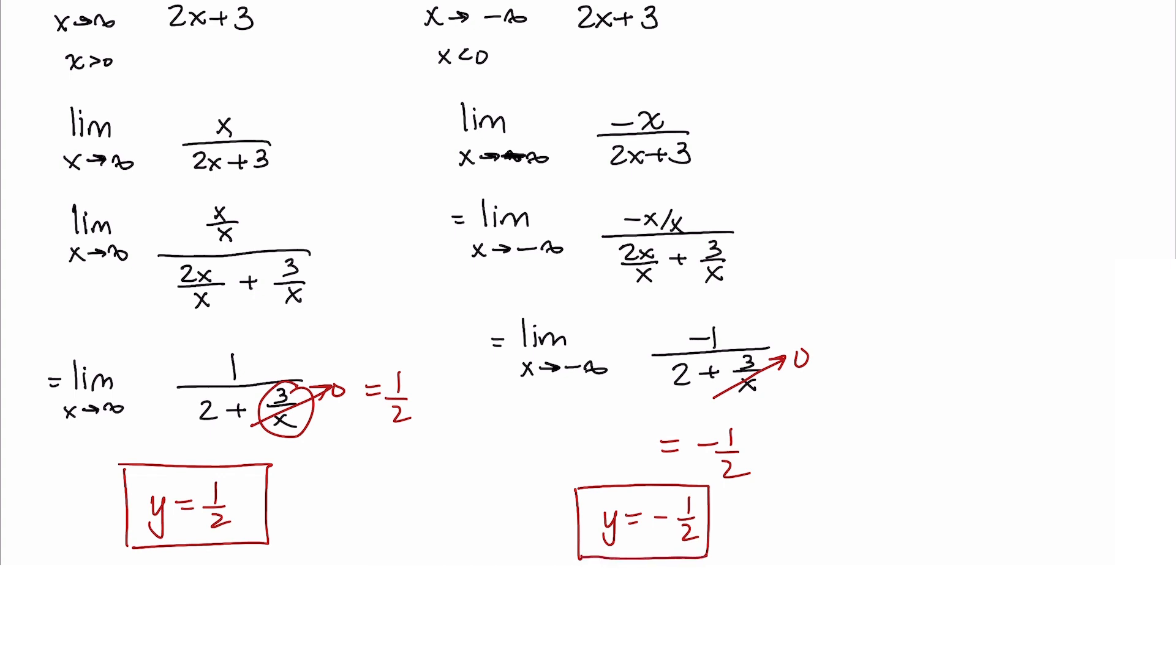If you were to graph the function, you would notice that to the right, the graph levels off to y equals one-half, and to the extreme left, the graph levels off to y equals negative one-half. Kind of cool.